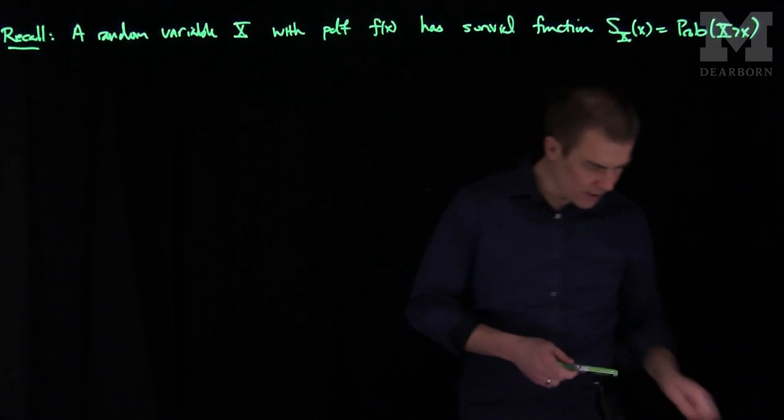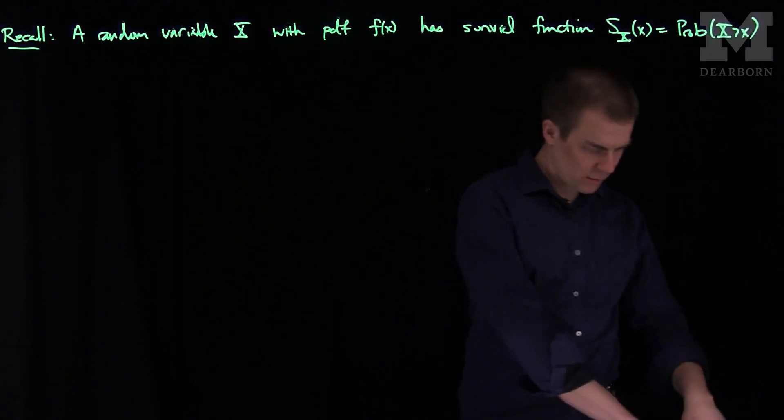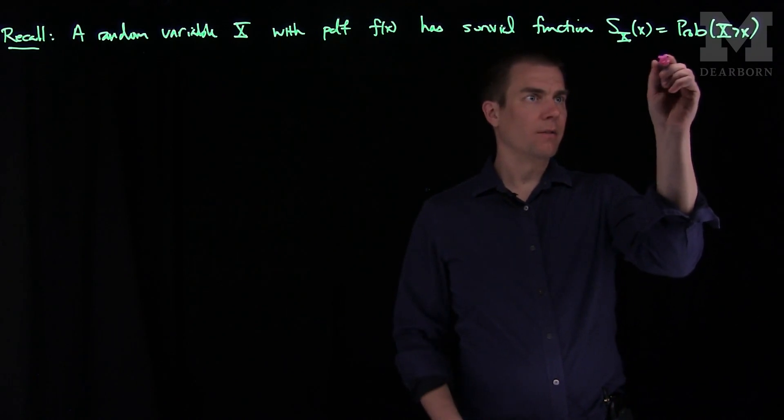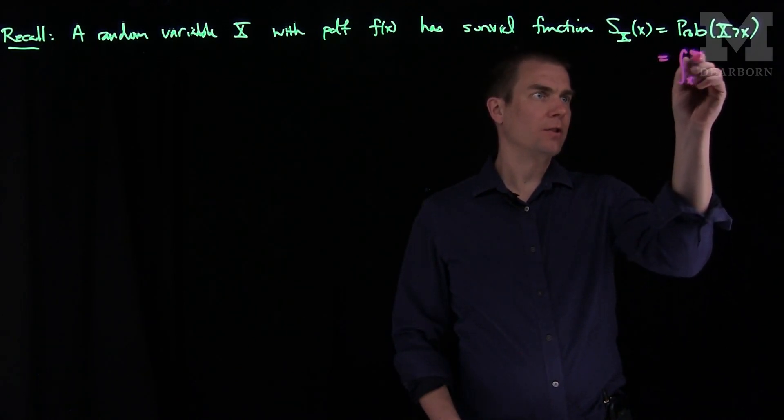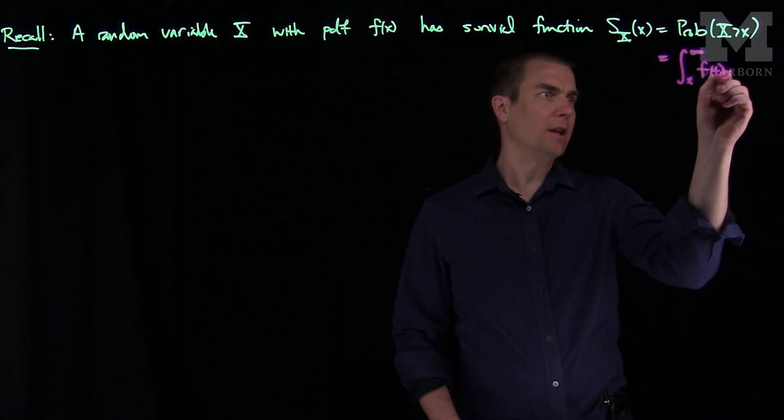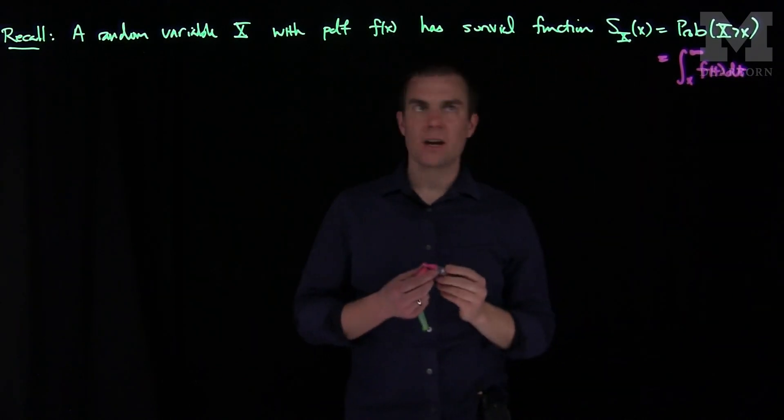We can integrate this function. We can write this survival function as the integral from x to infinity of f(t)dt, or that's our pdf of the random variable.